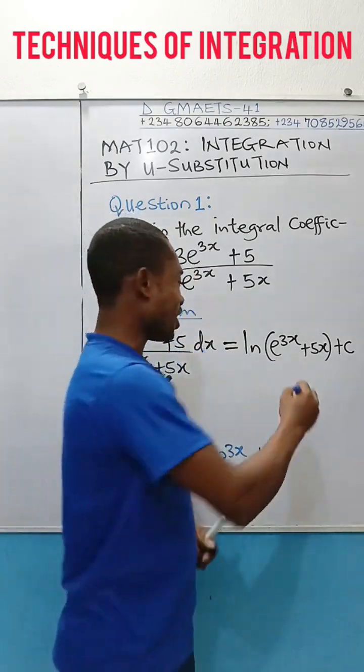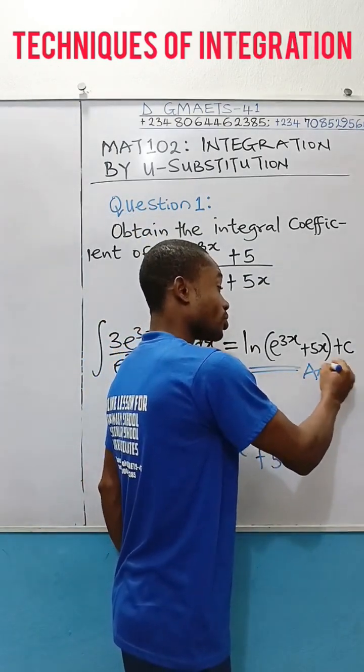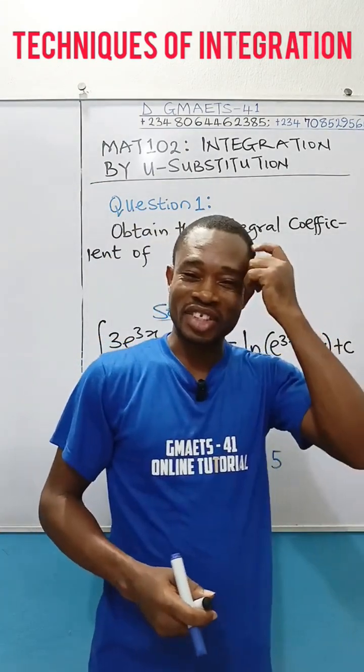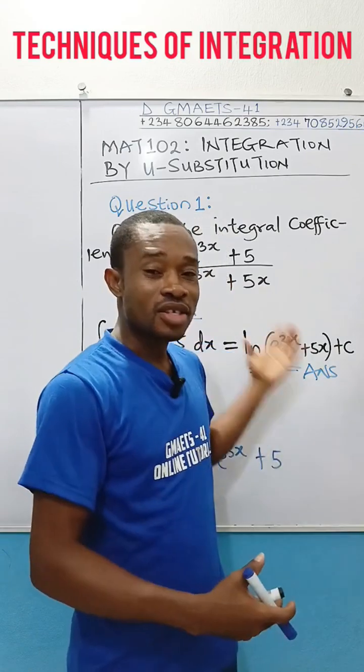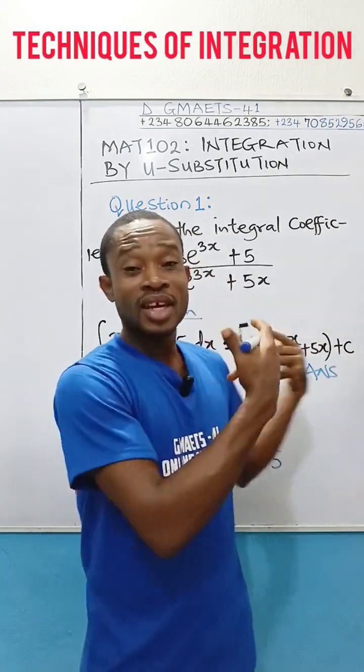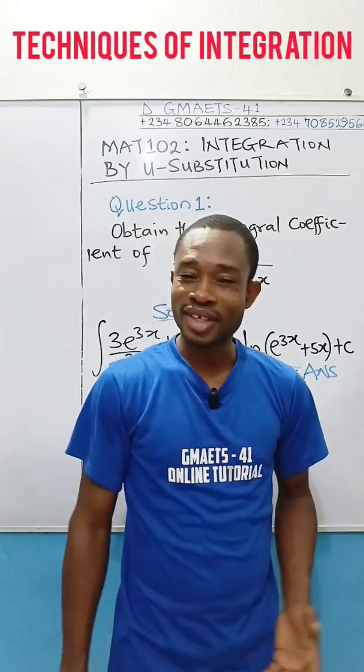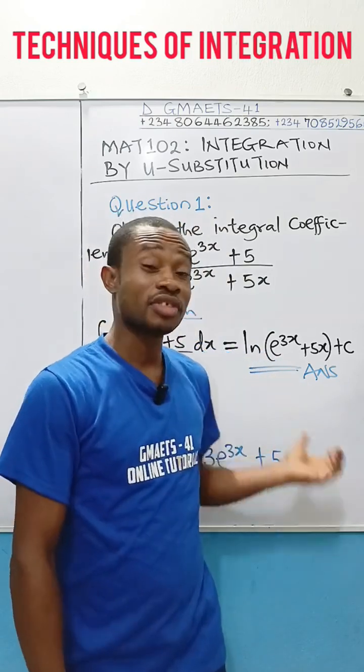I hope you love this, right? You are wowed by what you saw here on the board. So, whether you are letting u be equal to anything and then you differentiate and substitute for dx, or you substitute using u in this function, at the end of everything, you are coming back to this super shortcut I've shown you.